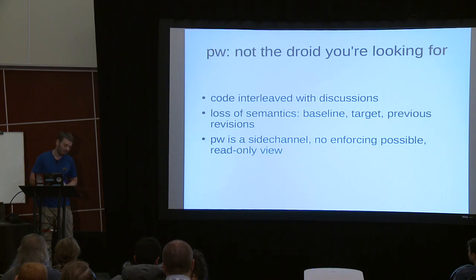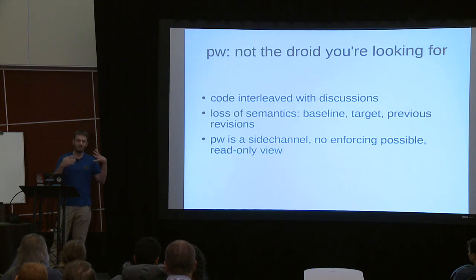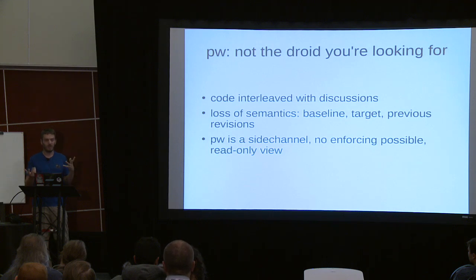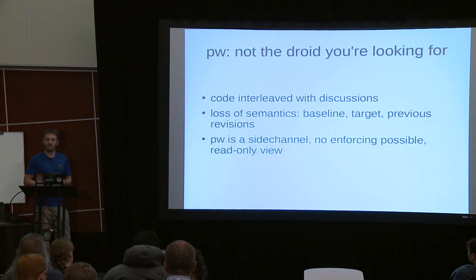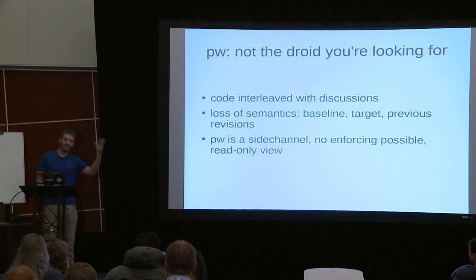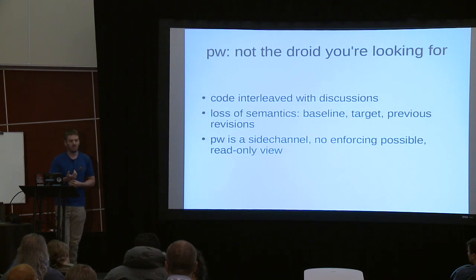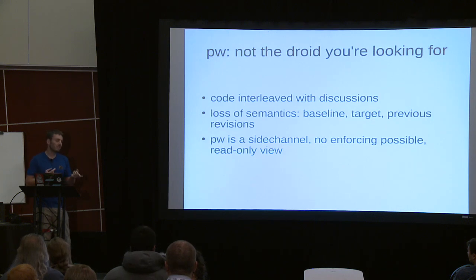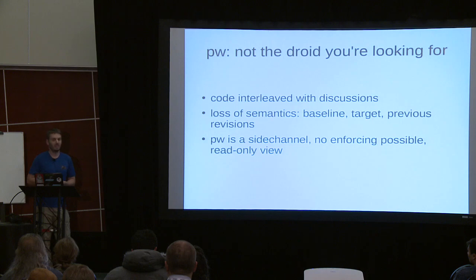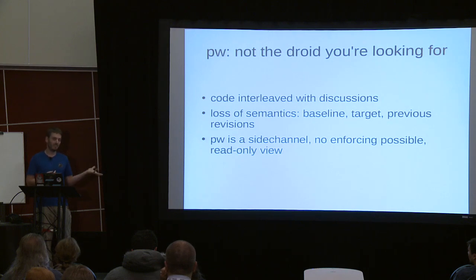The fundamental problem with patchwork is you lose a lot of semantics. If you work on a feature, do your branch, you have a ref log of all the previous versions in git. But when you throw that on a mailing list, the previous version is lost. We try some tricks in our fork of patchwork to reconstruct what the previous version was, and other subsystems have rules to link to previous submissions — but fundamentally it's information that the submitter has, and when you dump it on the mailing list it's lost. The same goes for the baseline: where should this patch series apply.